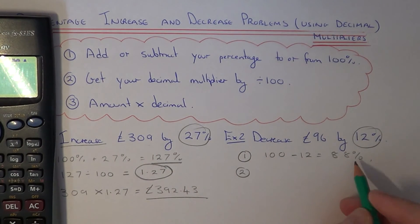The second step is to convert this percentage into a decimal. You do that by dividing by 100. So 88 divided by 100 is 0.88. Again this is our decimal multiplier.